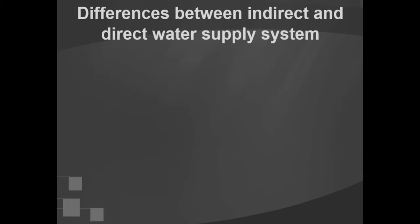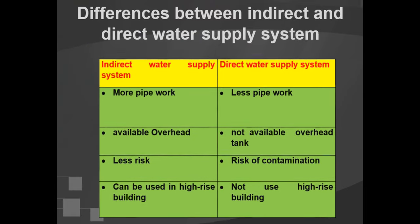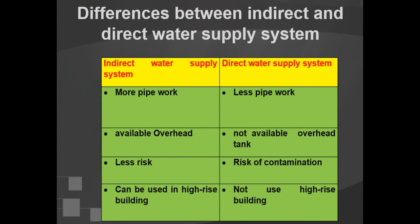Comparing indirect and direct water supply systems: the indirect system has more pipe work while the direct system has less. The indirect system uses an overhead tank but the direct system does not. The indirect system has less risk, while the direct system has a risk of contamination. The indirect water supply system can be used in high rise buildings, but the direct system cannot.